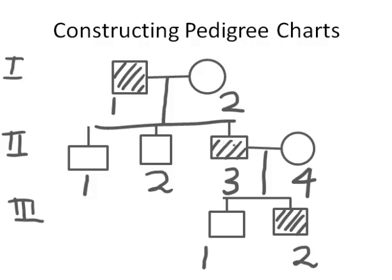So if we wanted to talk about a specific individual, for example the one highlighted here, we would say that individual is from the second generation and is the third individual from that generation — written as II-3. To recap: males are squares, females are circles; a horizontal line between them means they have produced offspring, and a descending line shows their descendants. Three boys are shown, and the third boy in the second generation — number three — is married and has also had two boys.